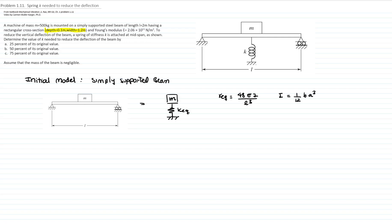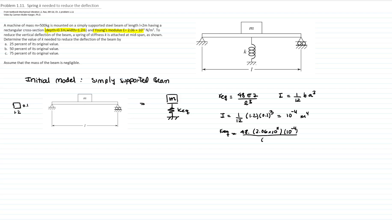The cross-section of the beam has depth 0.1 and width 1.2. The area moment of inertia I is given by bh³/12. Therefore, I equals (1/12) times 1.2 times 0.1 cubed, which equals 10 to the negative 4 meters to the fourth. Therefore, we can calculate the equivalent spring constant, which is 48 times the Young's modulus of 2.06 times 10 to the 11 N/m² times I, divided by L cubed (L = 2 m). That gives an equivalent spring constant of 1.236 times 10 to the 8 Newtons per meter.